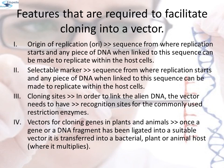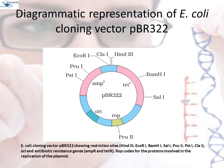Once a gene or DNA fragment has been ligated into a suitable vector, it is transferred into a bacterial, plant, or animal host where it multiplies. Here is the diagrammatic representation of the E. coli cloning vector PBR322, showing restriction sites HindIII, EcoRI, BamHI, SalI, PvuII, PstI, and ClaI, along with origin of replication and antibiotic resistance genes — ampicillin resistance and tetracycline resistance.